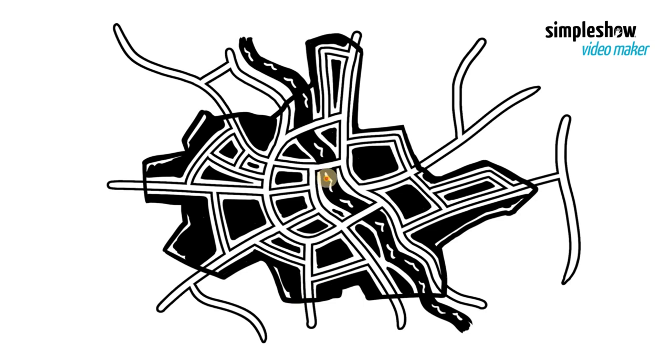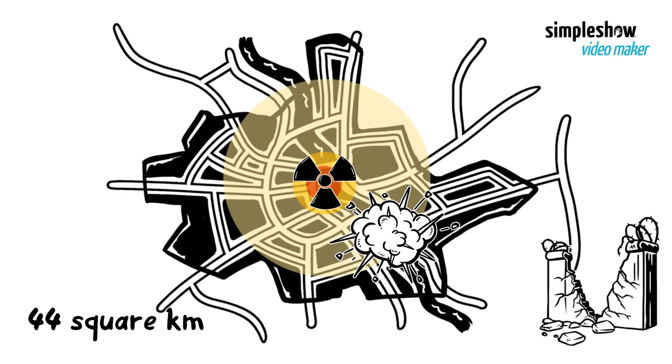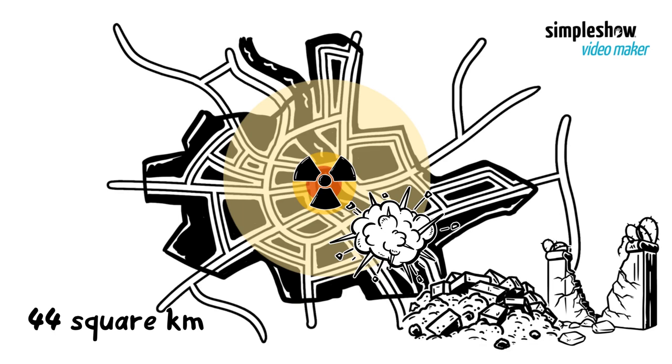Outside of this extreme radiation zone, in a 44 square kilometers area, a shockwave will flatten residential buildings, resulting in more deaths. There will be fire and debris everywhere.